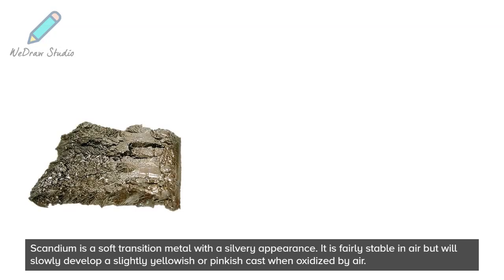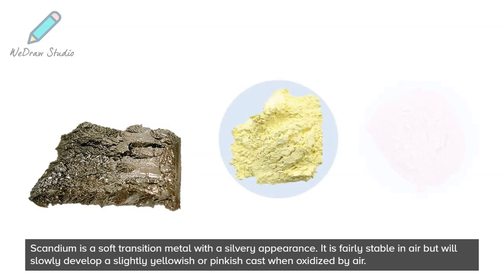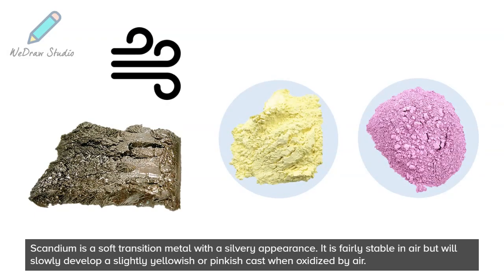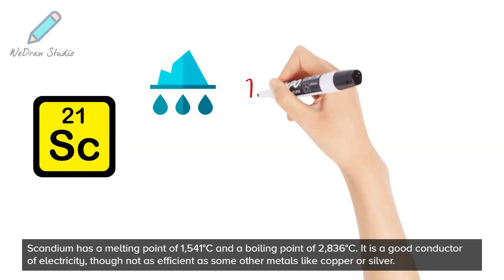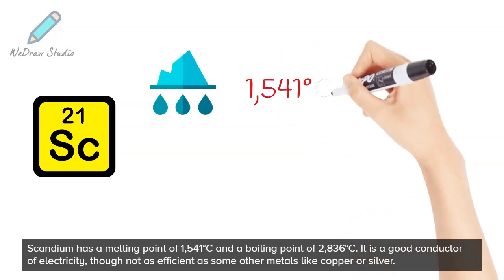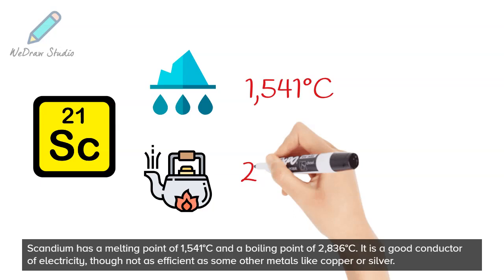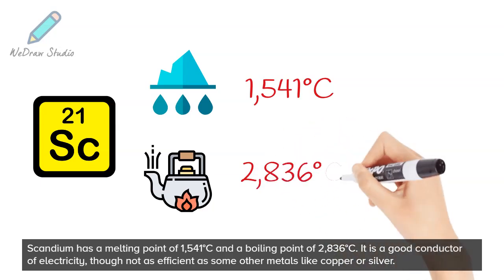Scandium is a soft transition metal with a silvery appearance. It is fairly stable in air but will slowly develop a slightly yellowish or pinkish cast when oxidized by air. Scandium has a melting point of 1,541 degrees Celsius and a boiling point of 2,836 degrees Celsius.